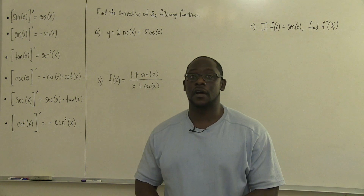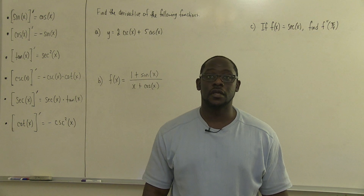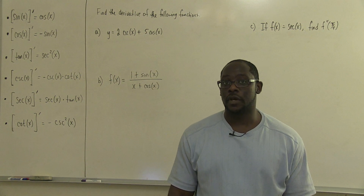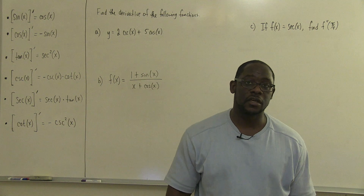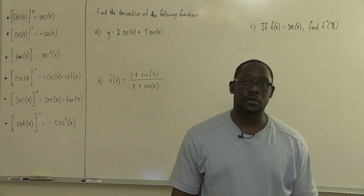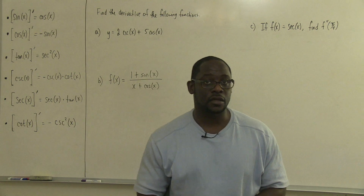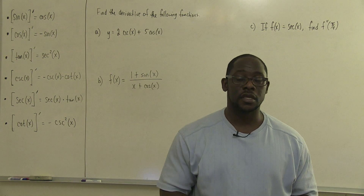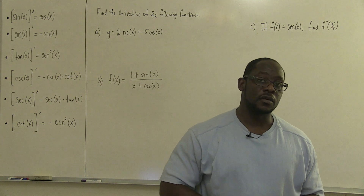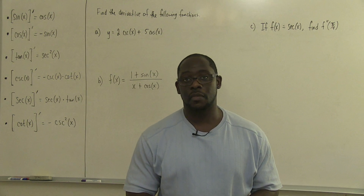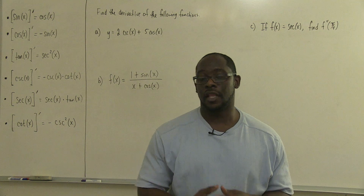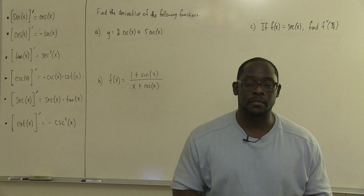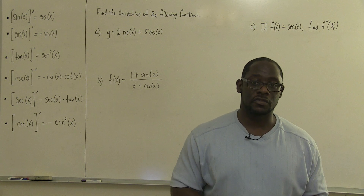Welcome again. This is part five of the differentiation rule series. For this particular portion, we're going to be taking derivatives of our basic trigonometric functions — sine, cosine, tangent, as well as cosecant, secant, and cotangent. We will be reserving the inverse trig functions and hyperbolics for later on. But for right now, we're going to focus on the basic six trigonometric functions.